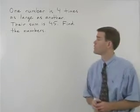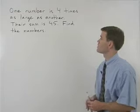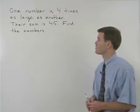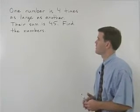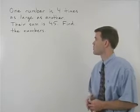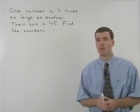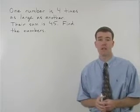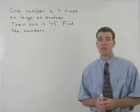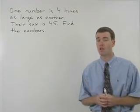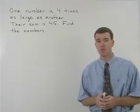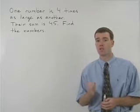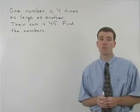Let's start by reading this problem through. One number is four times as large as another. Their sum is 45. Find the numbers. The reason that students get intimidated by word problems is they try to look at all the information at once. The best way to approach a word problem is to break it down sentence by sentence.